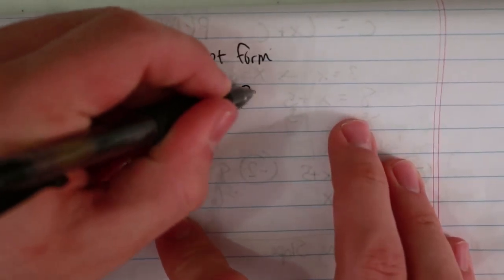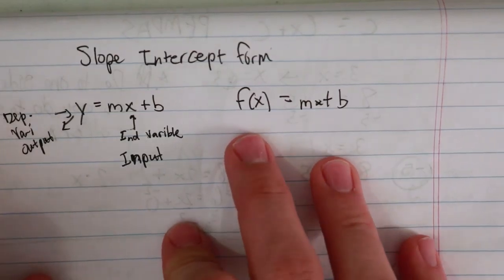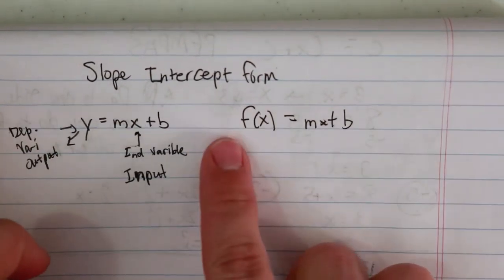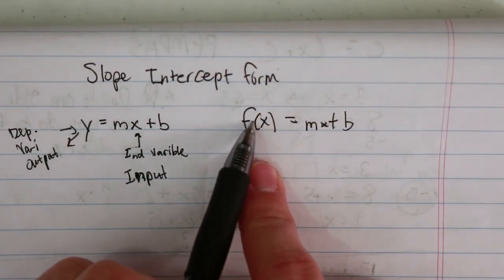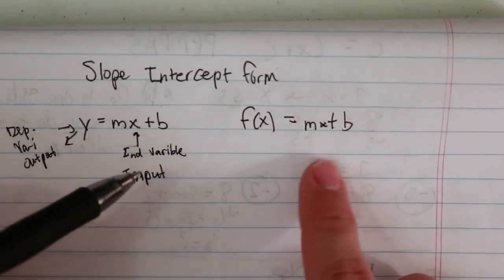You could also see this written as f(x) equals mx plus b. This is f(x) denoting the y because it's the function of x, so you put x in and you get out a number f(x), which would be the function of x.